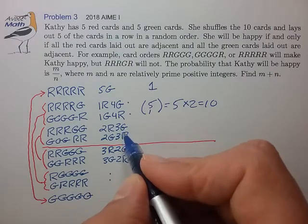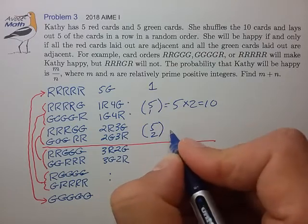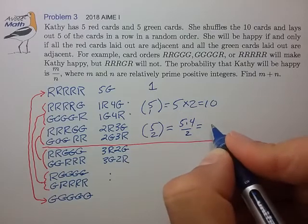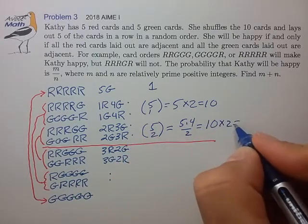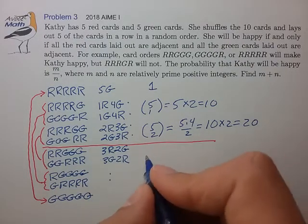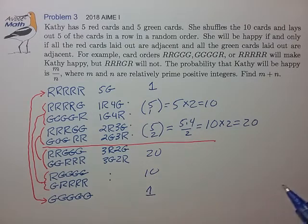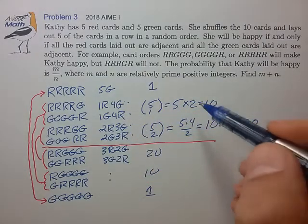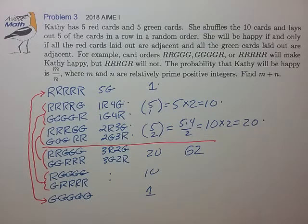For the fourth and fifth cases, we have 2 reds and 3 greens: there are 5 choose 2 ways to achieve that, which is 10. We multiply by 2 cases, giving 20 in total. By symmetry, those will also be 20, and 10, and 1. So all together, the number of ways to achieve happy configurations is 1 plus 10 plus 20, times 2, which equals 62.